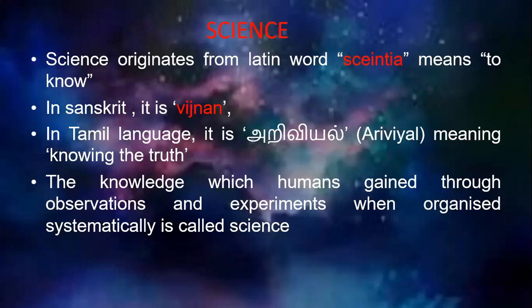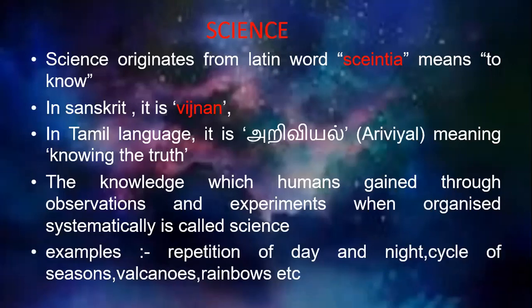The knowledge which humans gain through observations and experiments — such as bright celestial bodies, change of seasons, occurrence of rainbow, patterns in volcanoes — when organized systematically is called Science. People observed all these things for a long time, came to conclusions, and did experiments to get results. That knowledge gained by human beings is called Science.